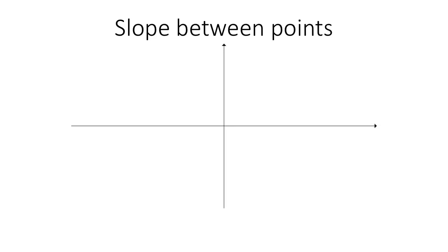We're going to introduce the notion of the slope between two points. If we draw two points, there's a line segment that connects them, and each pair of points that we draw has a different line segment. Notice that these segments look different — some of them are steep, some of them are shallow, and some of them are going different directions. The slope is a way to measure the steepness and the direction between two points.